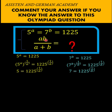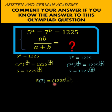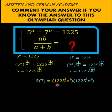Since we want to find the product a times b, let's multiply these two equations together. That means we multiply 5 times 7 on the left, and on the right we multiply 1225 raised to 1 over a times 1225 raised to 1 over b. So 5 times 7 equals 1225 raised to 1 over a times 1225 raised to 1 over b.